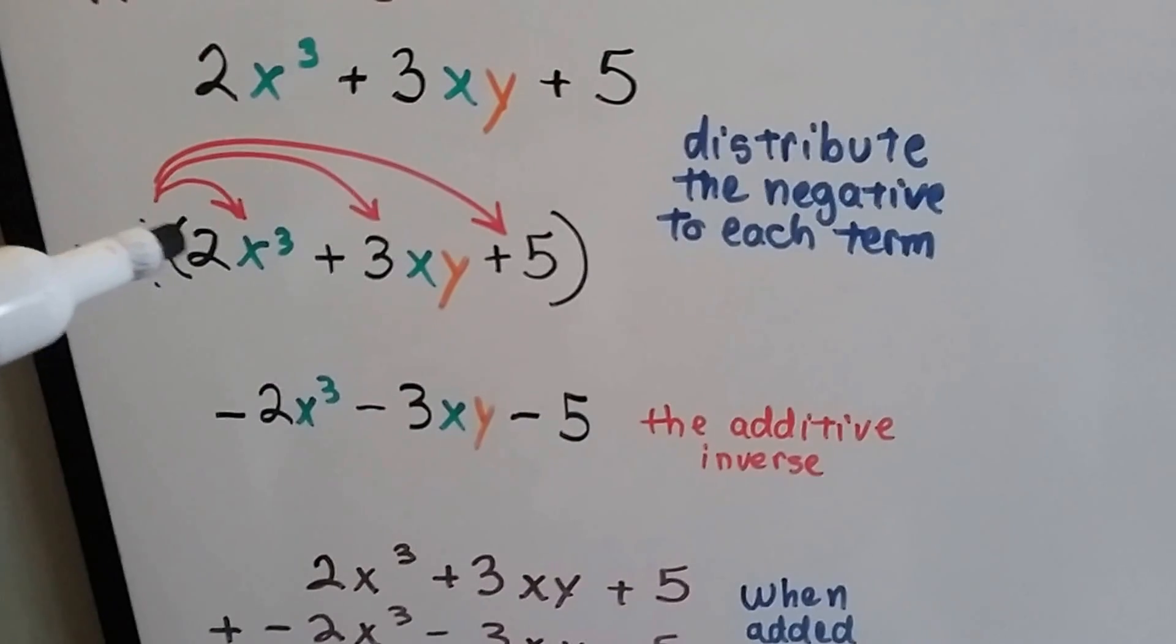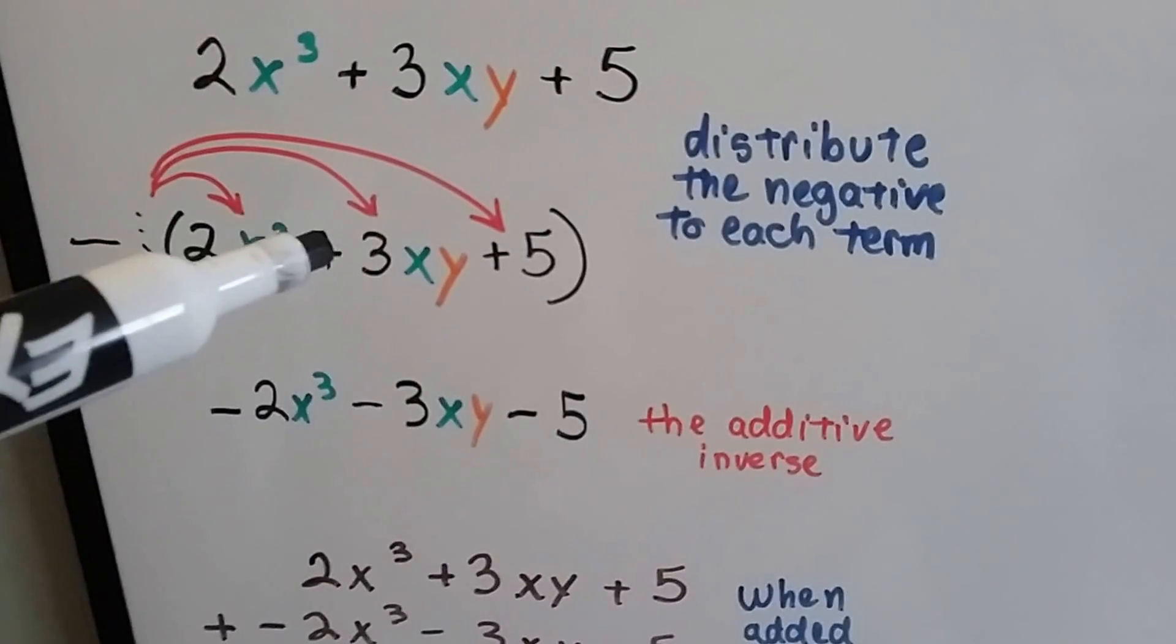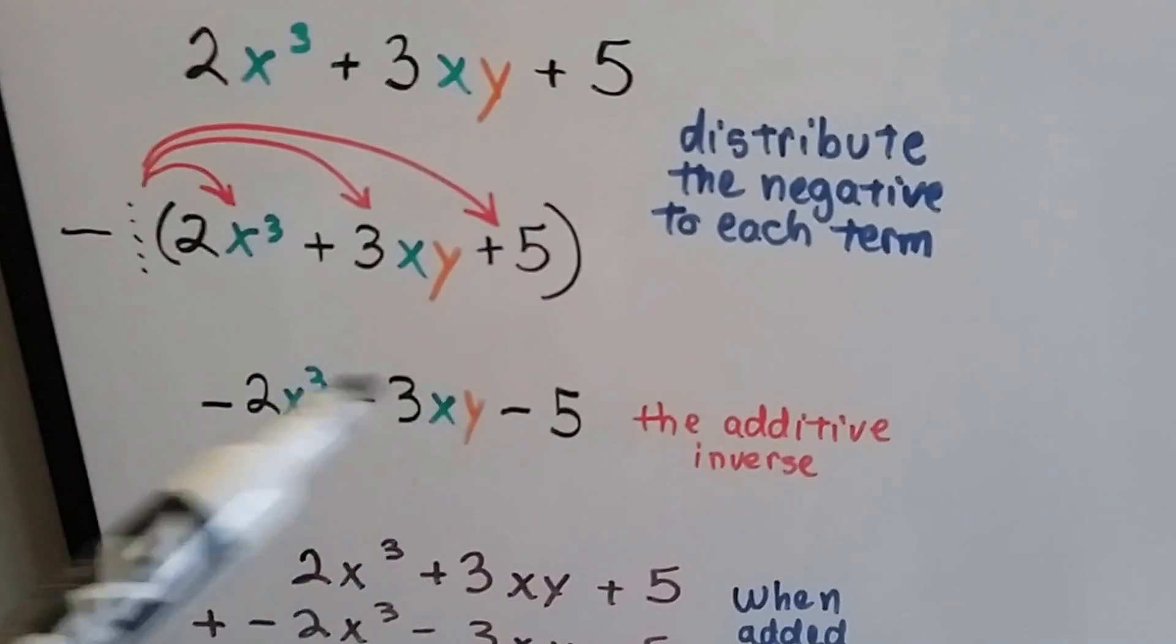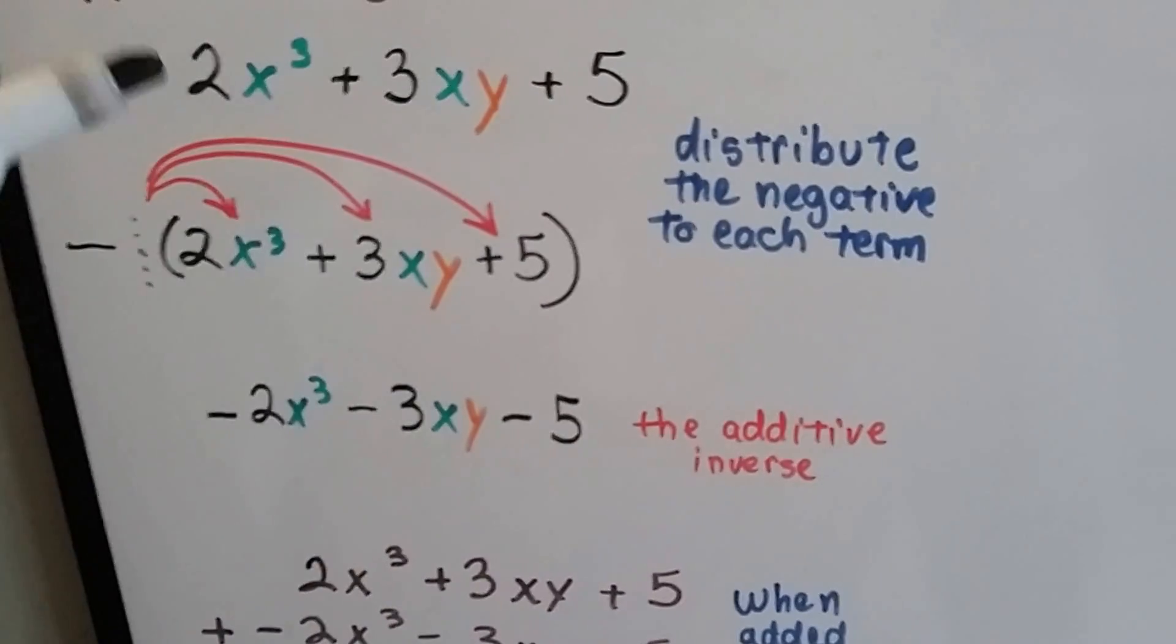If you look, this was a positive 2, now it's a negative. That was a positive, now it's a negative. That was a positive, now it's a negative. They're just opposites. This is the additive inverse of this first one.